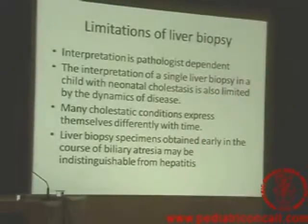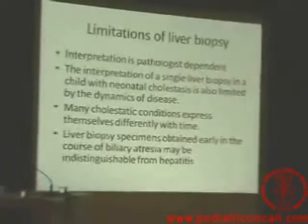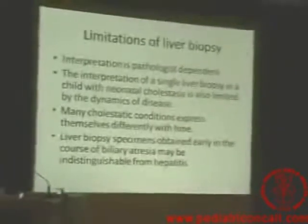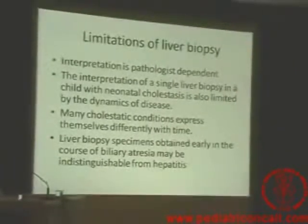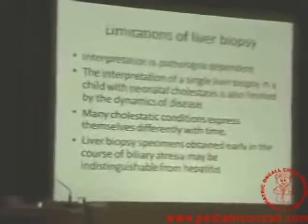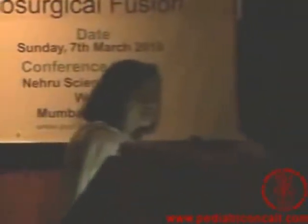Neonatal cholestasis is an evolving disease, so interpretation on a single biopsy may be difficult. Some centres have done 6 to 7 liver biopsies and finally picked up biliary atresia. It is not necessary that one biopsy will tell you yes or no. These findings express over a period of time, and if taken early in the course of the disease, you may confuse it with neonatal hepatitis.